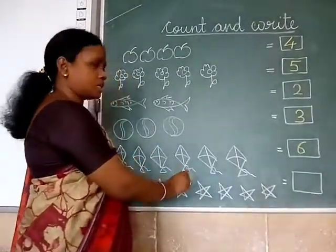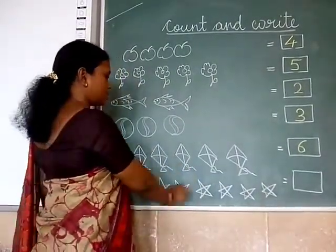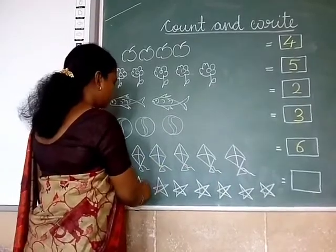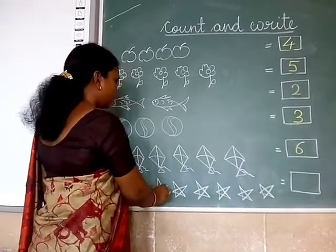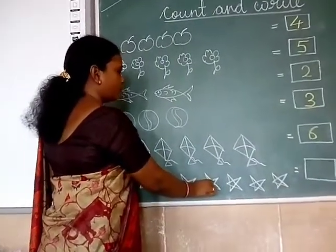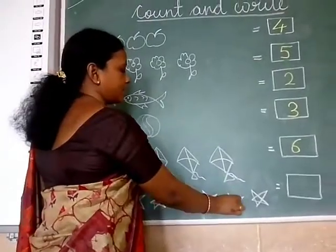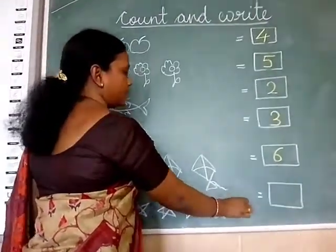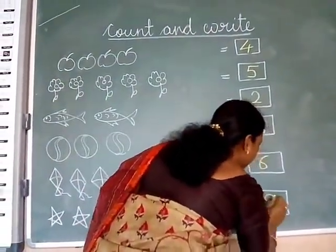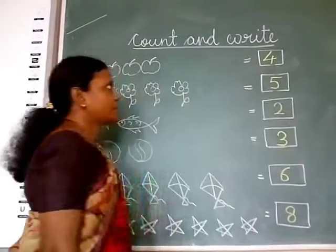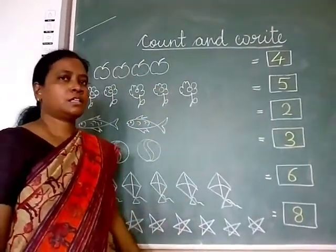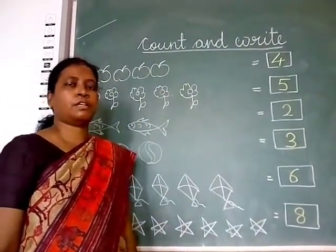Next is stars. How many stars can you see? 1, 2, 3, 4, 5, 6, 7, 8. Write here 8. So children, you will practice this in your maths copy.